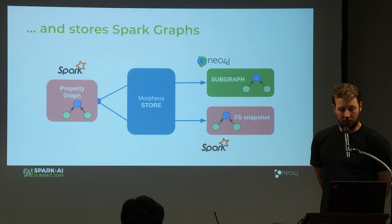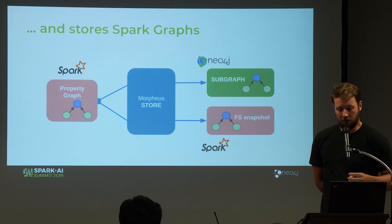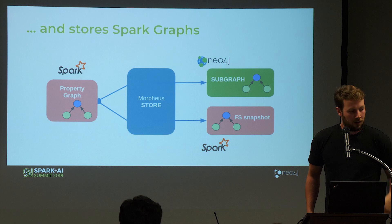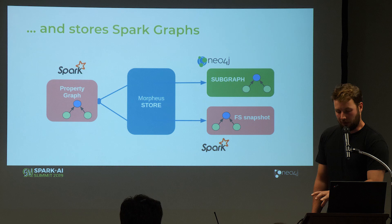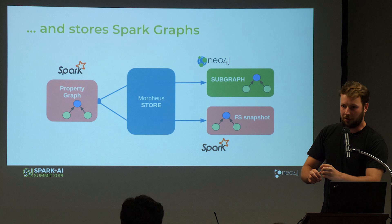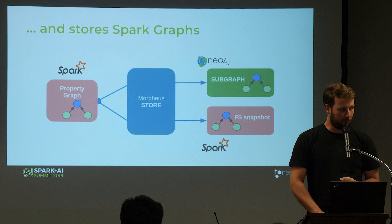The last capability is we can use the property graph stored in Spark and with Morpheus write it to Neo4j and persist it there. Or we can persist it on disk as a file-based format using a well-known directory structure with two directories, nodes and relationships, and we can retrieve it from disk again.